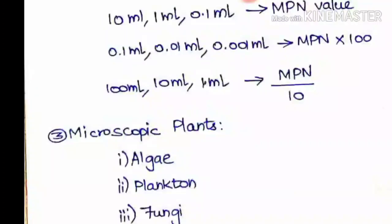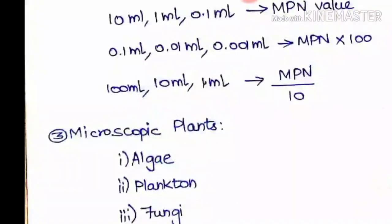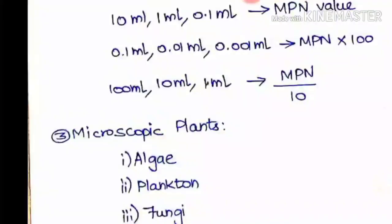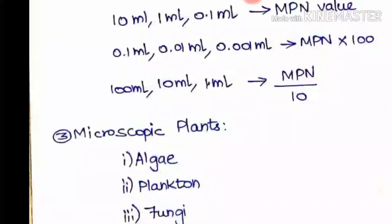The next is microscopic plants - algae, plankton, and fungi. Here algae and plankton absorb sunlight and live in water with that. Fungi is not related to sunlight because it attaches to other living organisms and grows with their support only. These are the microscopic plants.